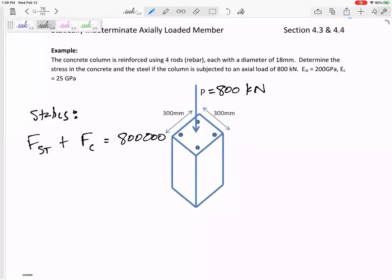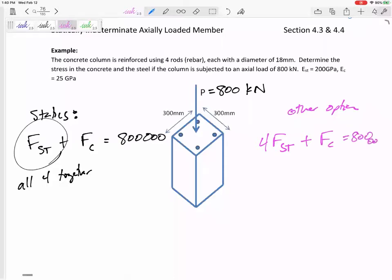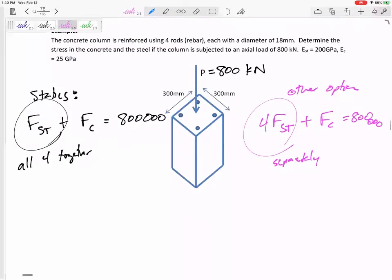Symmetry just tells me that the force in those steel are all equal. Now there's two different ways to do this. I just grouped all four of those rebar together and said there's one force of all four of those. Your other option is to think about them separately. You could have treated them individually, four F_ST plus F_C equals 800,000, and so you would have been doing them separate. Just later on, you would have to remember, I'm thinking about all of them separately, whereas I'm thinking about all them together.